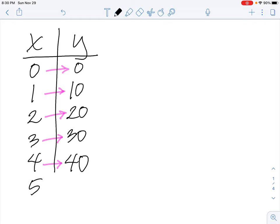And you'd be able to continue this on and figure out, oh, well, if I put in 5, I must be getting out 50. That's one way to show that function.